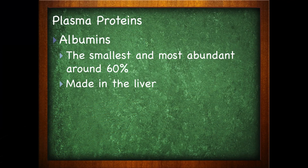The most abundant plasma protein is something called albumin. It is the smallest as well as the most abundant, making up about 60% of the plasma proteins. Albumin is made in the liver.